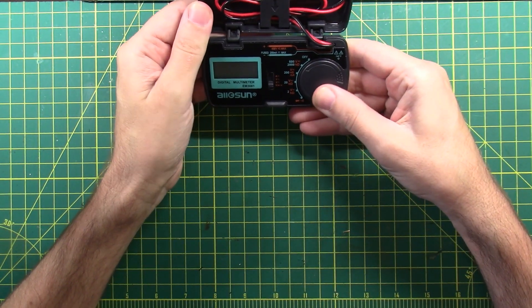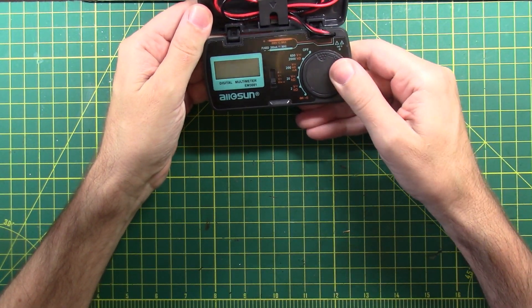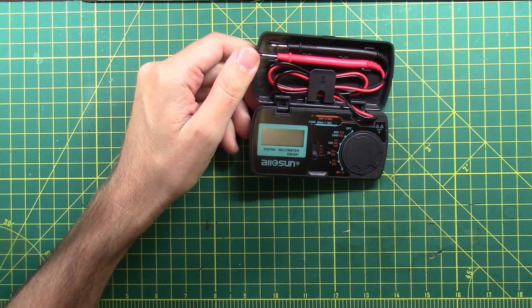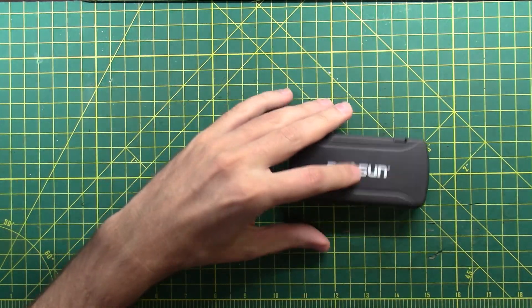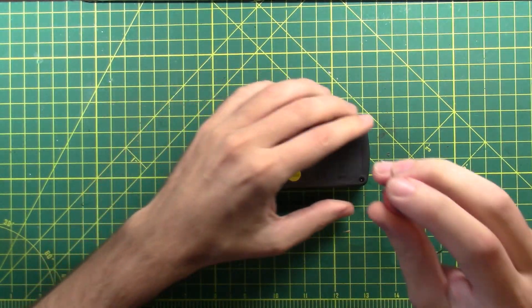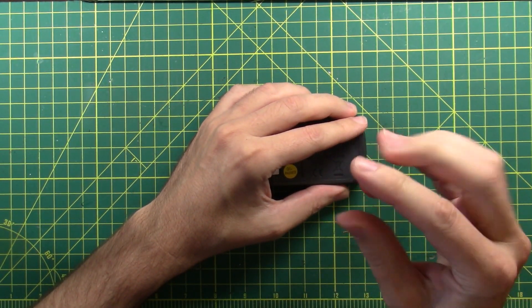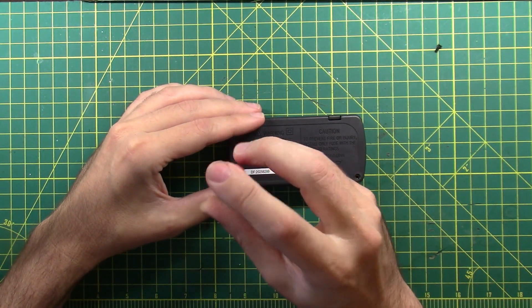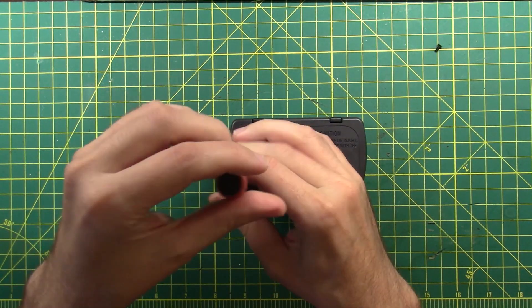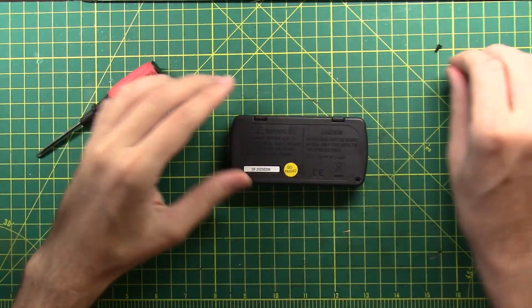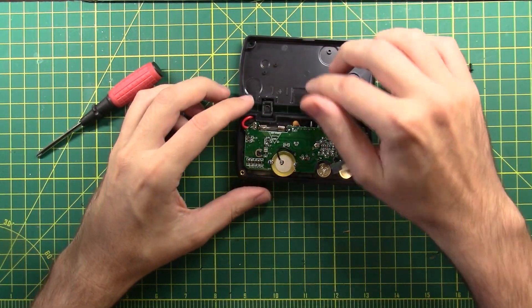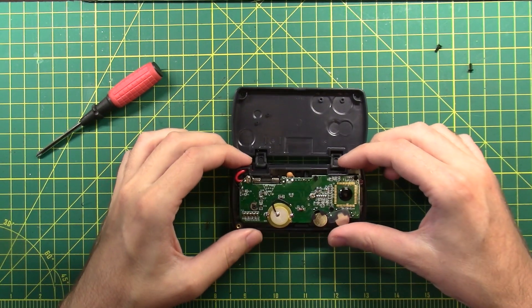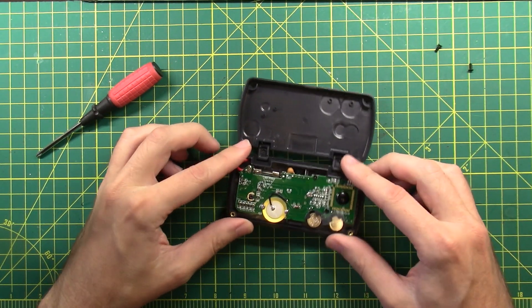So here we are. Let's turn it on. Or let's not turn it on because it needs batteries. Let's see what we get in the batteries department. One screw. Two screws. And then the back comes off. Oh, that's neat. Just comes off that little hinge area there.